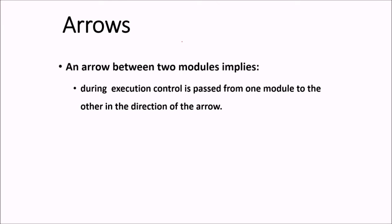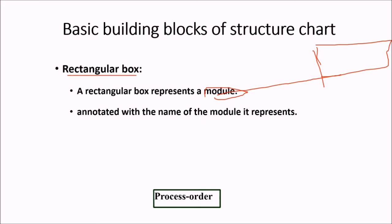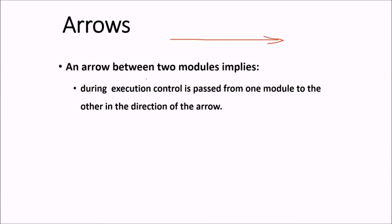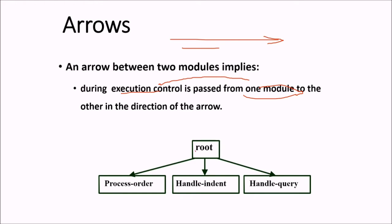Then we have arrows. What do you mean by an arrow between two modules? As we have seen, a rectangular box is for module. So an arrow between two modules, this represents or this implies that during execution, actual running, the control is passed from one module to the other in the direction of an arrow. This is an example. We have root. These are the direction. This module root is going to give or pass control to process order, handle event and handle query.